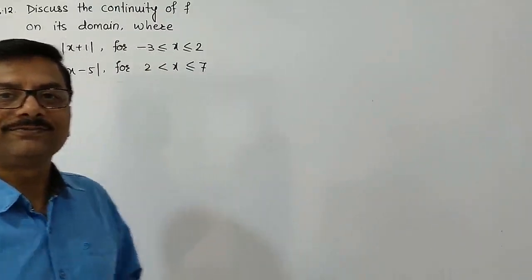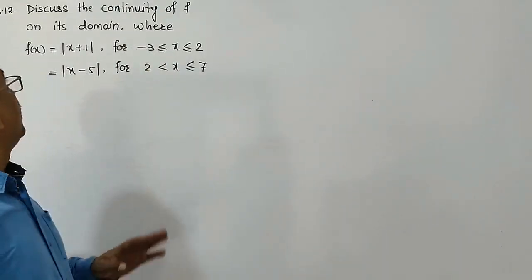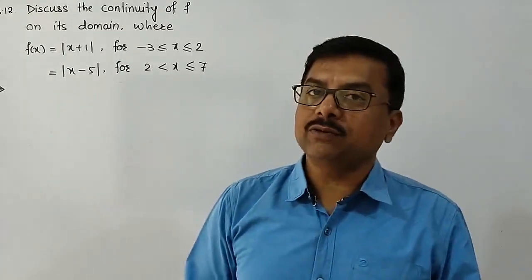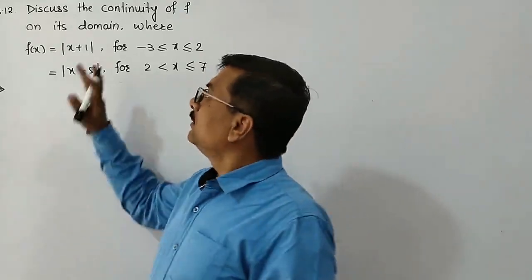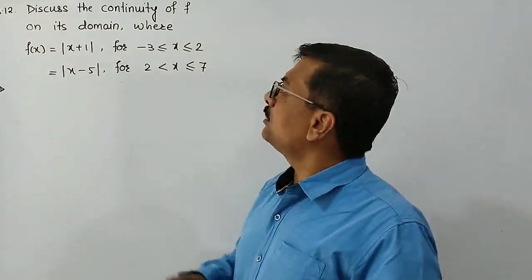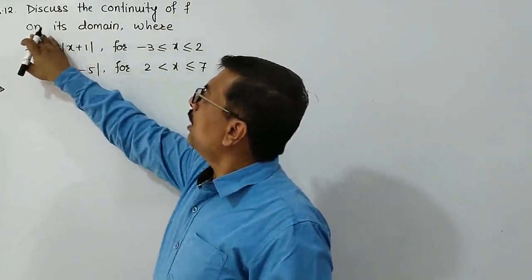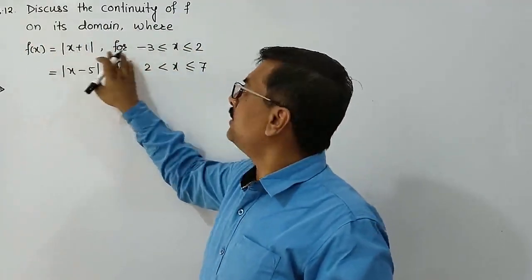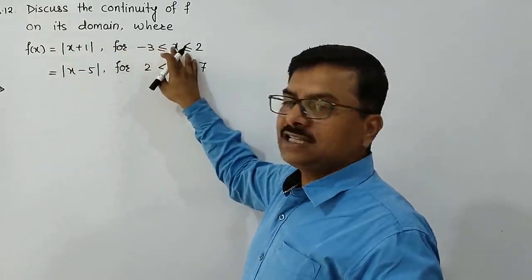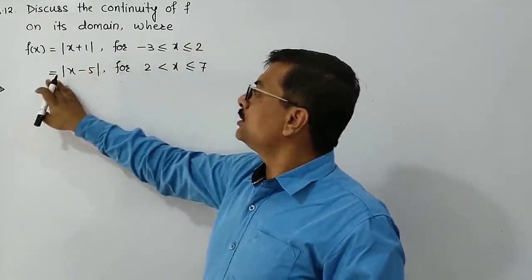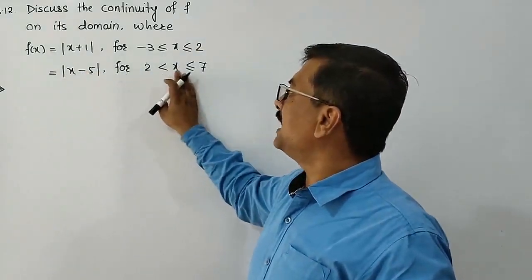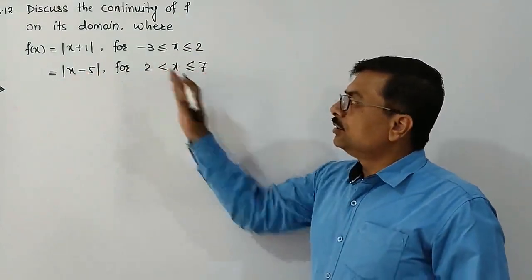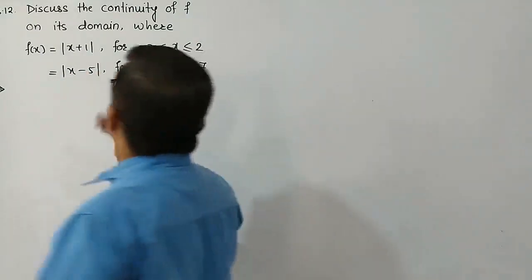In the last lecture we studied exercise 8.1 up to question number 11. Now question number 12: discuss the continuity of function f on its domain, where f(x) = |x+1| for -3 ≤ x ≤ 2, and f(x) = |x-5| for 2 < x ≤ 7. First of all, let us check the domain of the function.